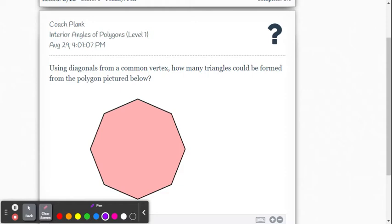So this one starts off with a polygon here. It says use the diagonals from a common vertex. So we're going to pick one of the vertices, I'm going to pick this one here, and we're going to draw in those diagonal triangles.